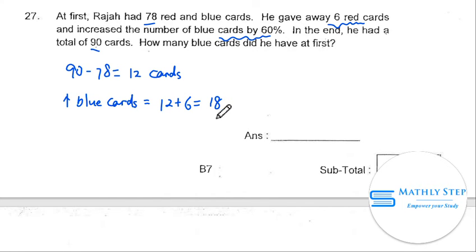And this 18 cards is the number of increase by 60%. So the original number of blue cards, let's assume it's B, and it increased by 60%. So the original number of blue cards is 18 divided by 60%, which is 18 divided by 0.6,